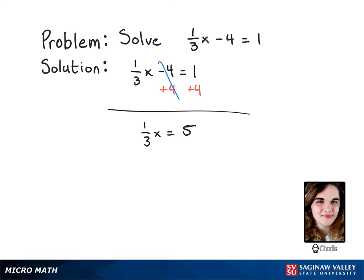You could divide both sides by 1 third, but really that's just the same as multiplying both sides by its reciprocal, which is 3 over 1.